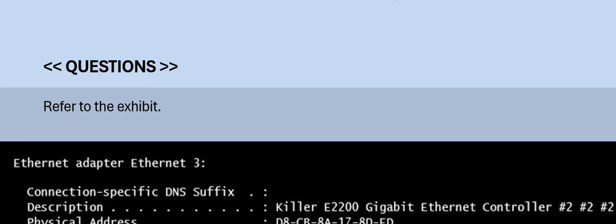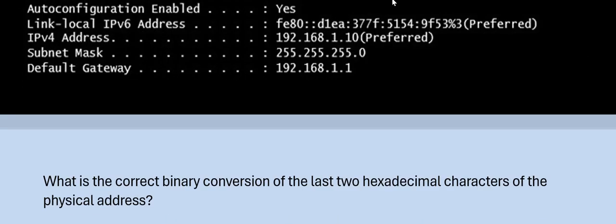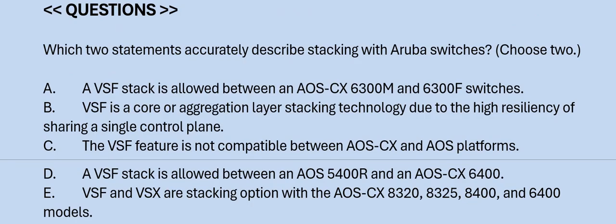Next question: Refer to the exhibit. What is the correct binary conversion of the last two hexadecimal characters of the physical address? Please look at the options. The correct answer is Option B.